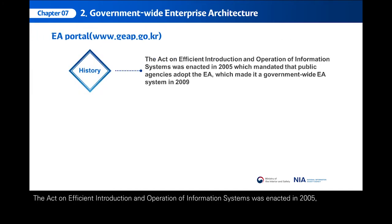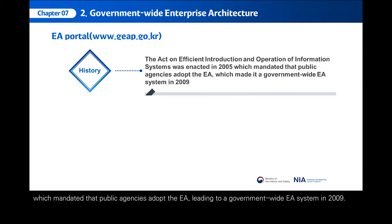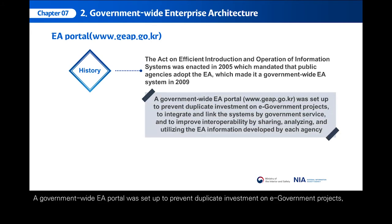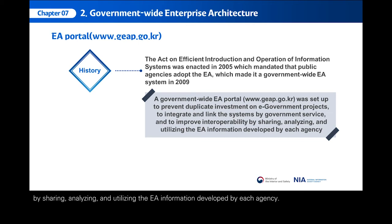The Act on Efficient Introduction and Operation of Information Systems was enacted in 2005, which mandated that public agencies adopt EA, leading to a government-wide EA system in 2009. A government-wide EA portal was set up to prevent duplicate investment on e-government projects, to integrate and link the systems by government service, and to improve interoperability by sharing, analyzing, and utilizing the EA information developed by each agency.